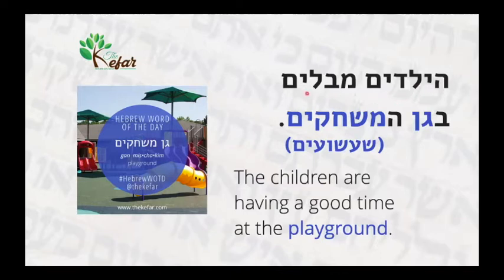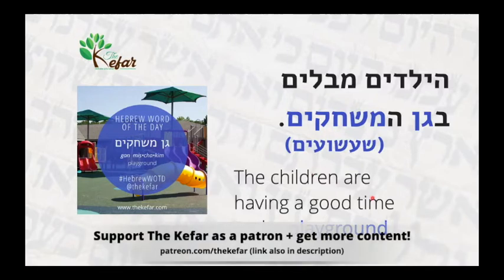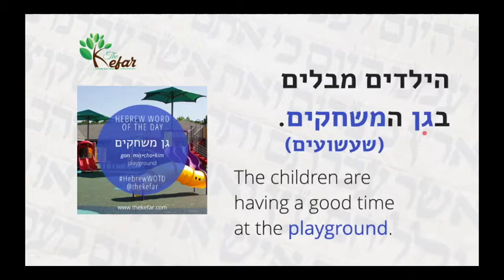So Hayeladim Mevalim — the children are having a good time, the children are enjoying themselves. Began Hamishakim: the preposition Be means 'in' or 'at,' and then we have Gan Mishakim, which is a playground. Gan Hamishakim means 'the playground,' so Began Hamishakim means 'at the playground.'